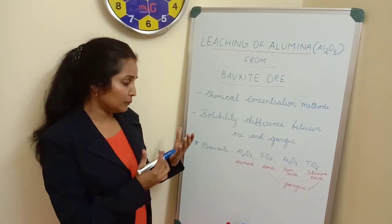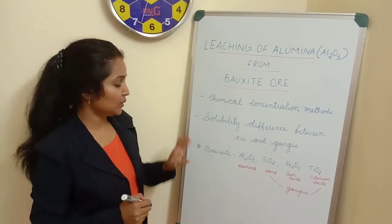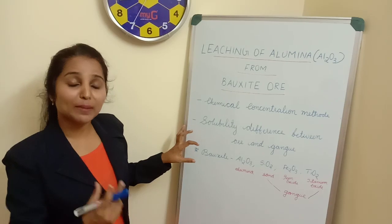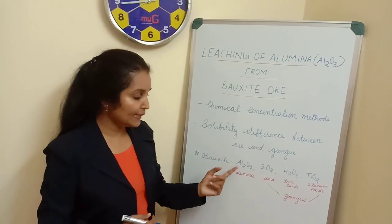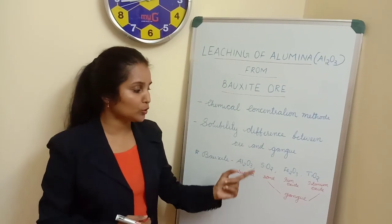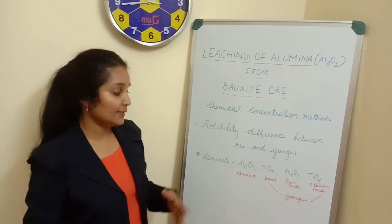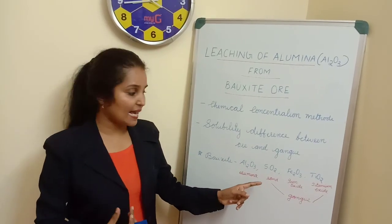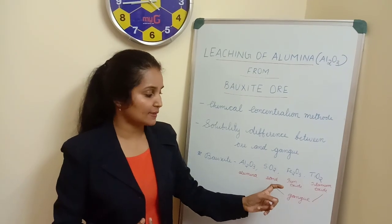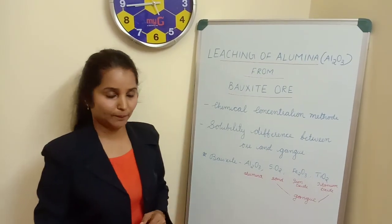Now, coming to the leaching process. As you know, bauxite is the principal ore of aluminium. This bauxite contains Al2O3, SiO2, Fe2O3, and TiO2, where Al2O3 is alumina, SiO2 is sand, Fe2O3 is iron oxide, and TiO2 is titanium oxide.